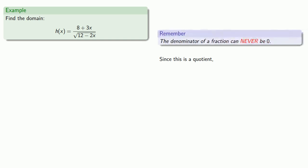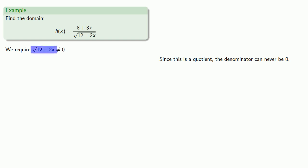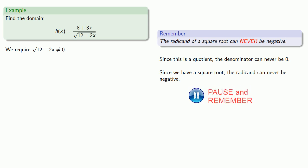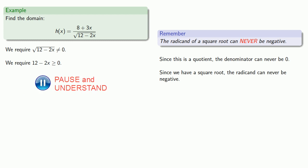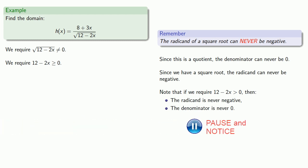Remember, the denominator of a fraction can never be zero, so we require √(12 − 2x) ≠ 0. But there's more — this is a square root, and since we have a radical, the radicand can never be negative. So we also require 12 − 2x ≥ 0. Now we have two inequalities, both of which must be satisfied. But if we require 12 − 2x > 0 strictly, then the radicand will never be negative and the denominator will never be zero. So we can combine these into a single requirement: 12 − 2x > 0.